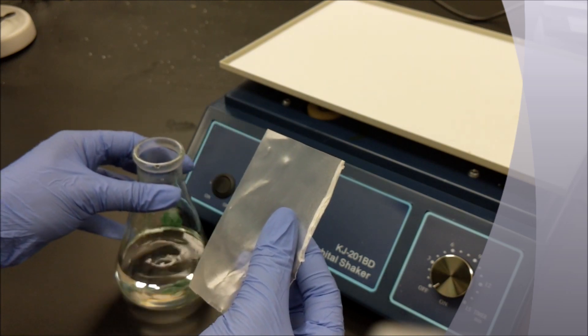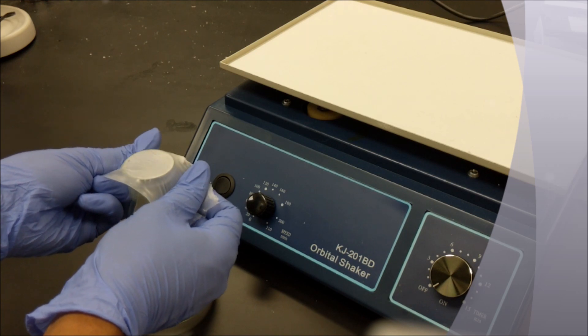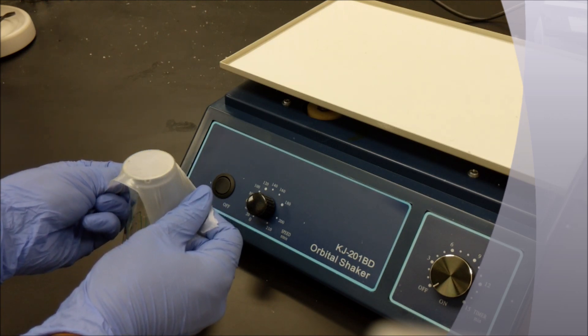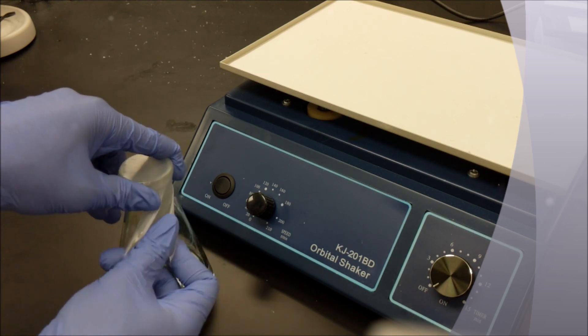Parafilm is very stretchy, and so you'll cover the top of the flask and pull down very slowly to ensure you do not rip the parafilm during the transfer process.